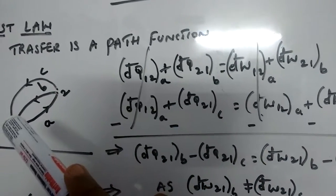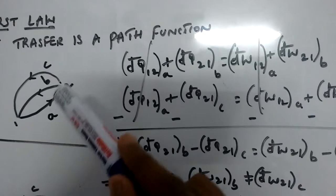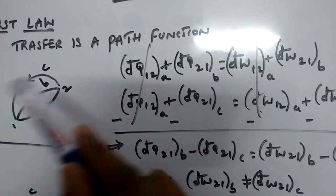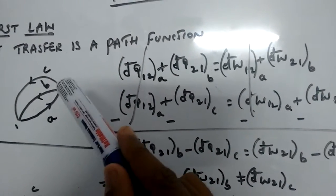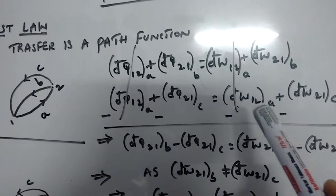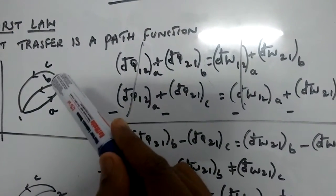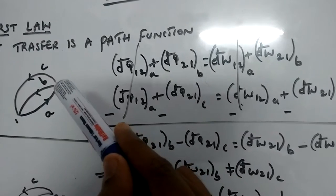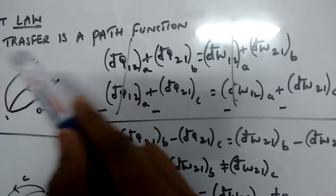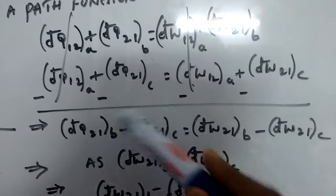Similarly, dQ₁₂ through path A plus dQ₂₁ through path C equals the work transfer from the first law: dW₁₂ through path A plus dW₂₁ through path C. Now let us solve these two equations.